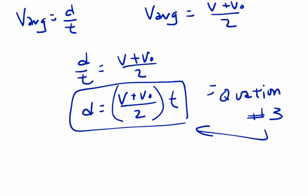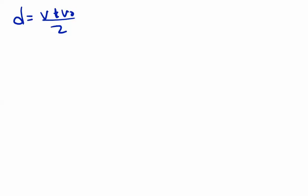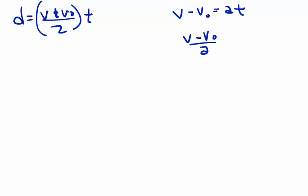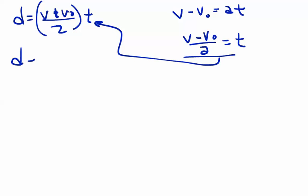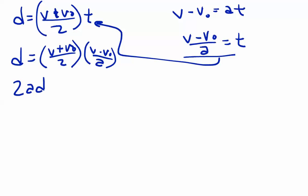To get equation number four, we do a bit of algebra. Starting with equation three — d equals (v plus v-naught) over two times t — and from equation one, v minus v-naught equals at. Solving for t by dividing both sides by a gives t equals (v minus v-naught) over a. Plugging that into equation three: d equals (v plus v-naught) over two times (v minus v-naught) over a. Multiplying both sides by 2a gives 2ad equals (v plus v-naught)(v minus v-naught).